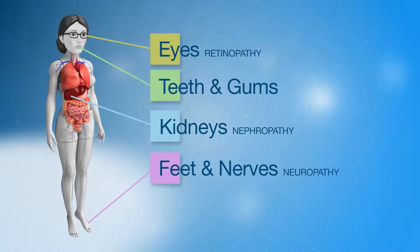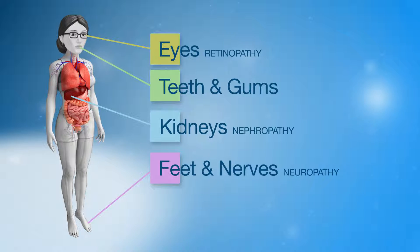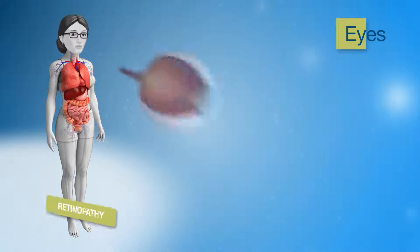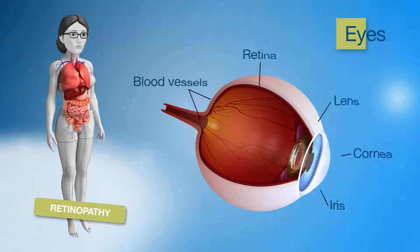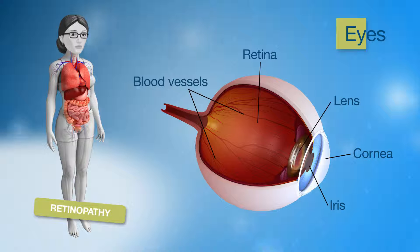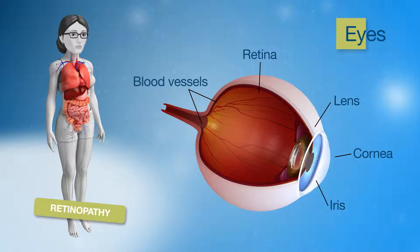We will discuss each of these complications, as well as the important health checks to detect the start of any problems and ensure that your health is on track. Your eyes have tiny blood vessels that supply blood to the retina, which is the seeing part of the eye. High blood glucose levels can cause damage to the small blood vessels and will lead to vision loss if not detected in time.